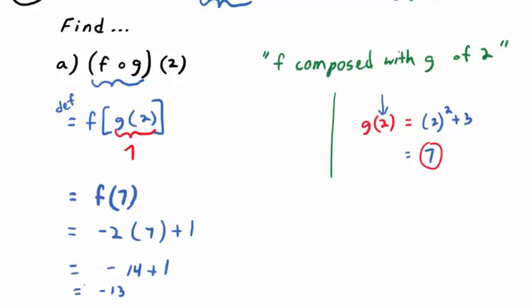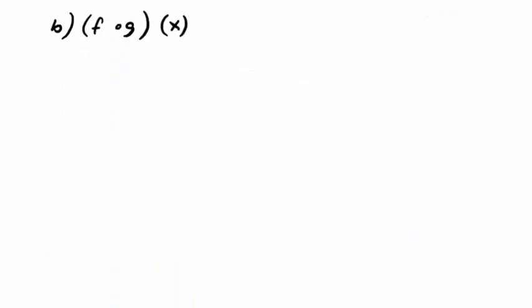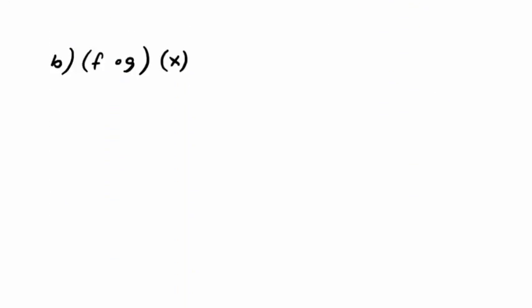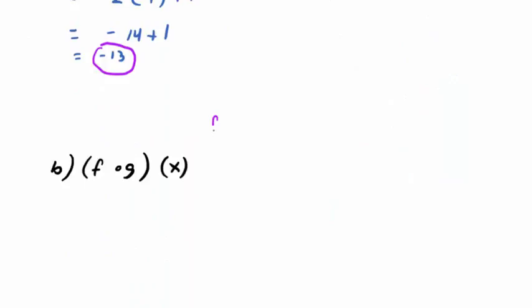In other words, f composed with g of 2 is negative 13. If you work it from the inside out, you get to familiar territory — function notation — real quick. Most of the problems you'll see will probably not give you a specific input like 2. Most of the time the input will be x, and you have to figure out what the formula is. So, to remind you: f of x is negative 2x plus 1.